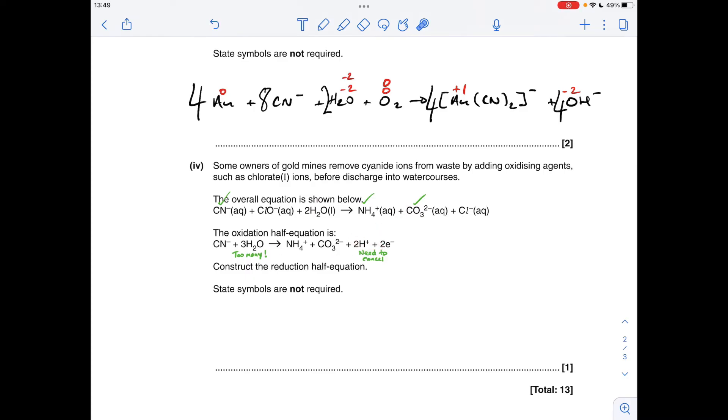Moving on the last bit. You can see I've annotated it already so I'll obviously explain that as I go through the answer. We've got to come up with the reduction half equation, we've got the oxidation half equation. Basically what we need to do is look at the overall equation and see what we've already got, and obviously what's missing is definitely going to feature in the other half equation.